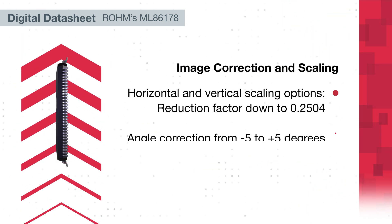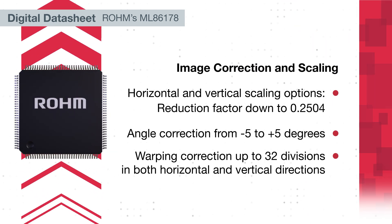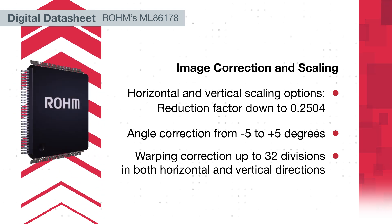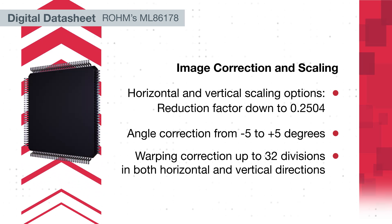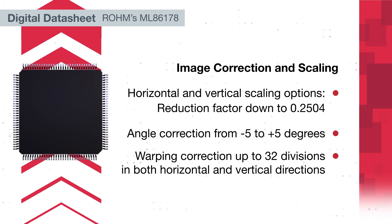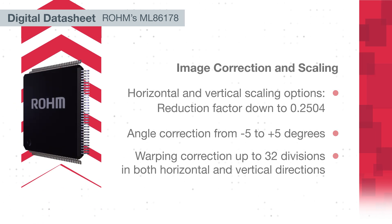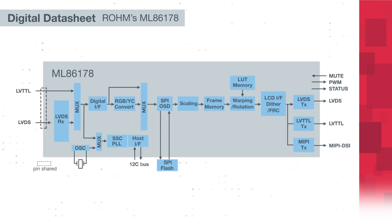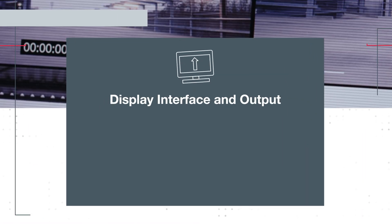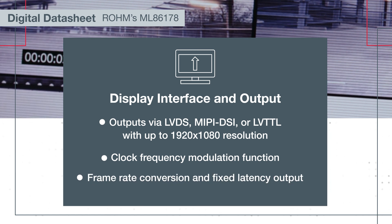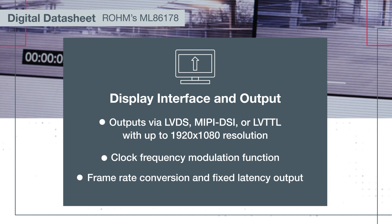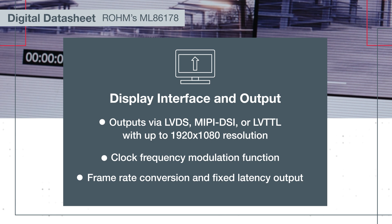The ML86178 offers precise image scaling from 0.2504 up to full resolution, angle correction within a plus or minus 5 degree range, and warping correction adjustable in up to 32 divisions both horizontally and vertically for cohesive HUD alignment. Output options include LVDS, MIPI DSI, and LVTTL with resolutions up to 1920x1080.